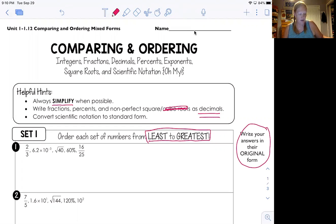Okay. So here's how I recommend doing these problems. So two thirds, I know two thirds is 0.67. 6.2 times 10 to the negative third. So I'm going to maybe write it up here. 6.2 times 10 to the negative third. Remember negative means go to the left. One, two, three. So I get 0.0062. Okay. The square root of 40. So you might have to look back at your notes because you don't remember all the perfect squares, but the square root of 36 is a perfect square and the square root of 49 is a perfect square and 40 is in between there.